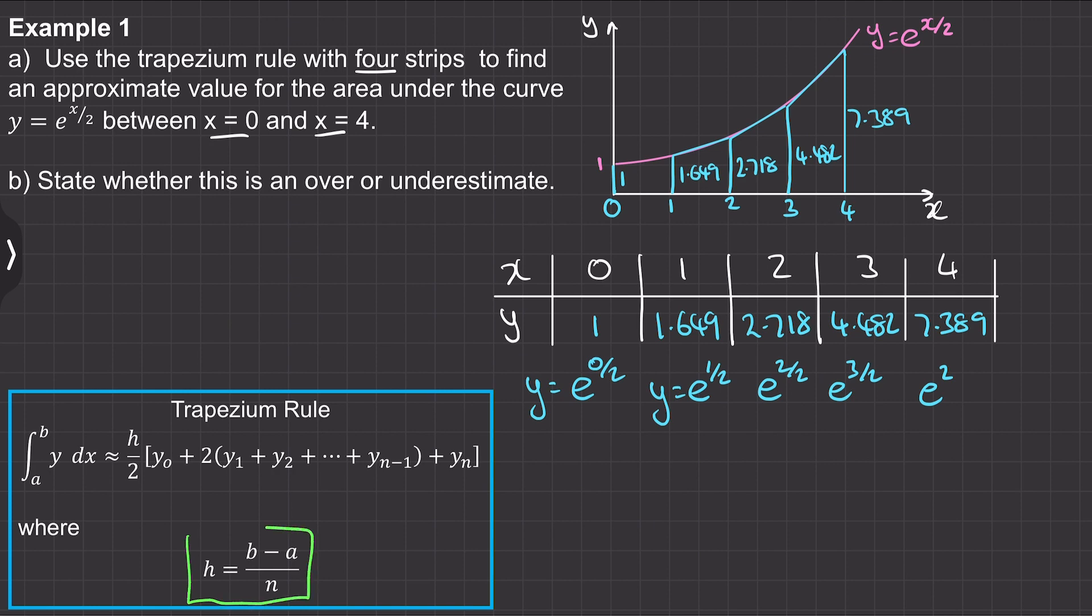And now we need to work out this value of h. So h will equal b which is the 4 minus the a of 4, and this is 1 which you can see the length of every strip is 1.